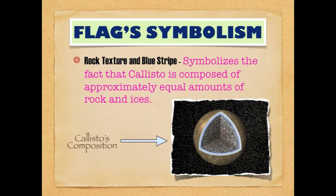The picture on the bottom right shows Callisto's composition. The blue layer towards the surface is just ice, and the thin purple layer below that is believed to be a layer of water. Beneath those two layers is just icy rock, which is what Callisto is primarily composed of.